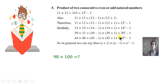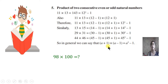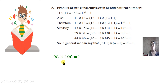So in general, whenever there is a product of two consecutive even or two consecutive odd natural numbers, we can write it as (a minus 1) into (a plus 1) which equals a squared minus 1, where a is the number between the two consecutive numbers. Let's check whether you have understood. Suppose it is 98 into 100 — which is the number between 98 and 100? Think about it, and write it in the form a squared minus 1.